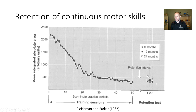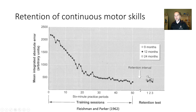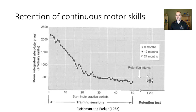Interestingly, when they looked at retention — our best measure of motor learning — performance at the retention test was very similar to performance at the end of original practice. There was a visible but non-significant increase in error. This confirmed the adage: once you practice this continuous task and get good at it, even coming back two years later you're still good at it. Participants did not return to baseline.